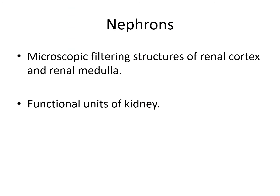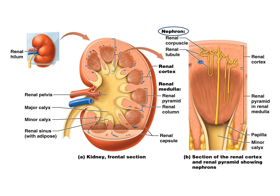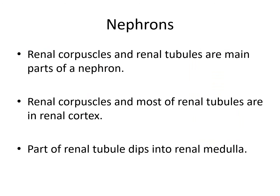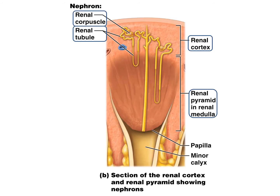Most importantly, the kidney is formed by functional units called nephrons — microscopic filtering structures of the renal cortex and renal medulla. These are the actual functional units that do the filtering and formation of urine. Most of the nephron is in the cortex but dives deep into the medulla. Nephrons are composed of renal corpuscles and renal tubules, mostly in the cortex, with only renal tubules dipping deep into the renal medulla.